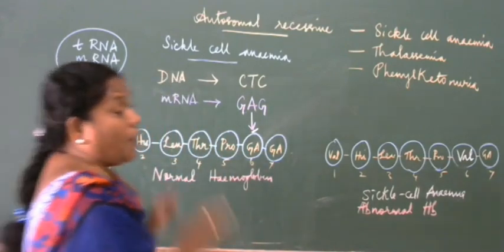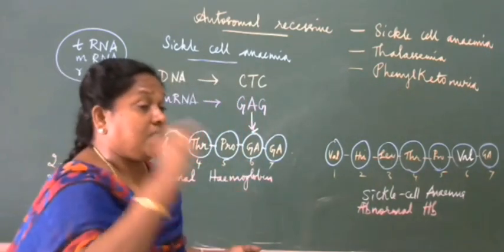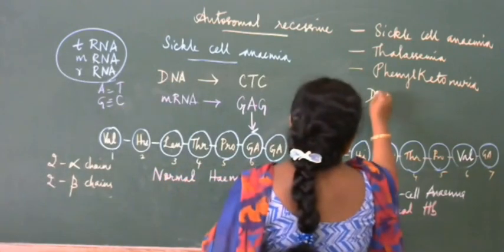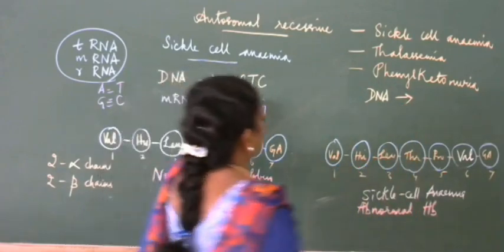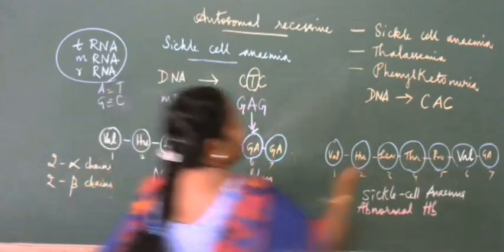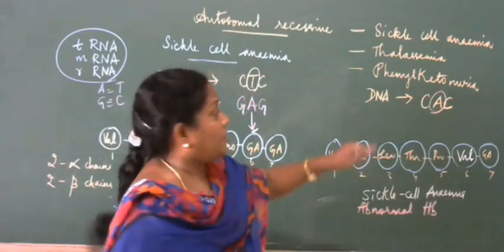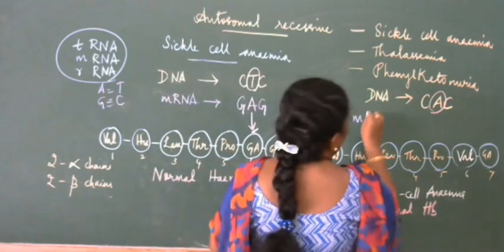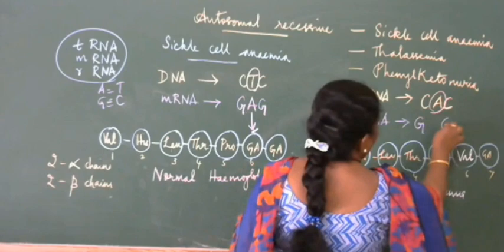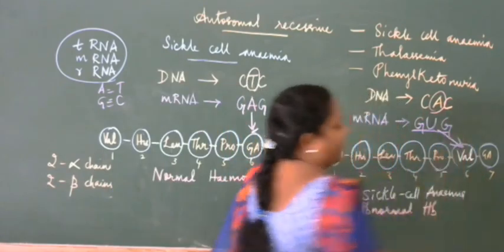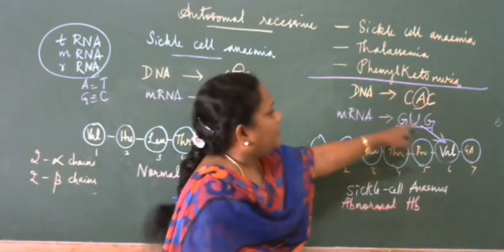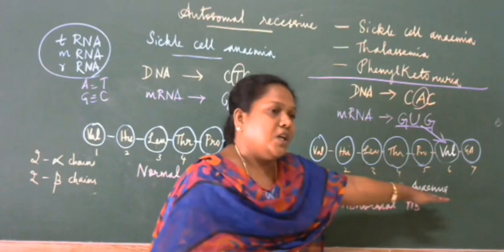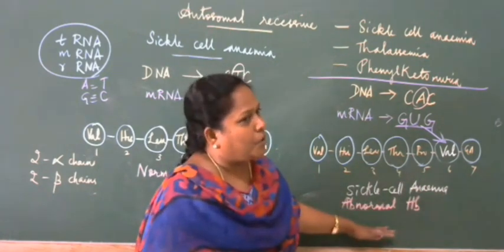Due to mutation, the DNA codon CTC is changed to CAC — the middle base T is changed to A. When this mutated sequence is copied to mRNA, the codon becomes GUG (since A in DNA pairs with U in mRNA). GUG codes for valine instead of glutamic acid. This change in sequence is responsible for the production of abnormal hemoglobin, resulting in sickle cell anemia.